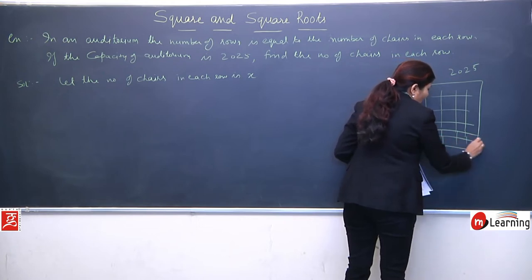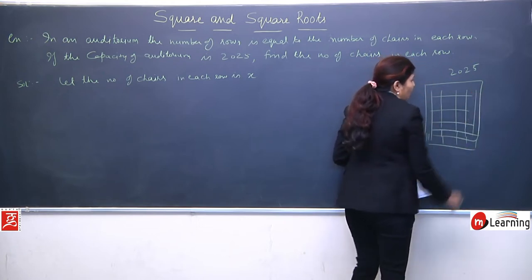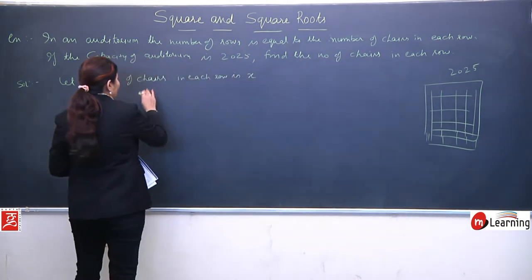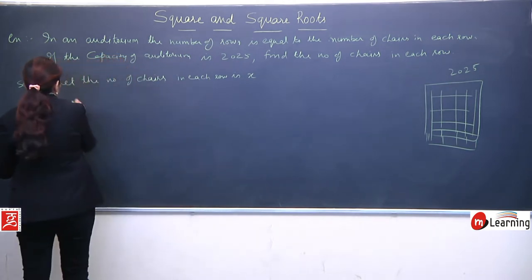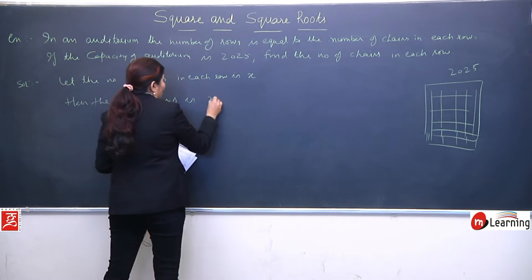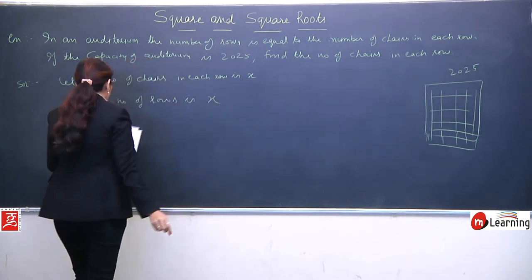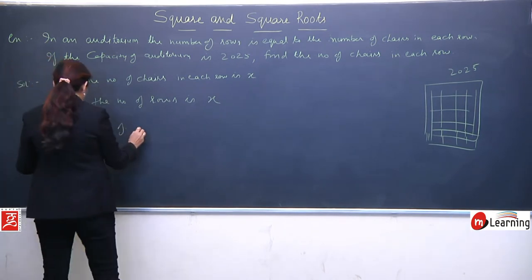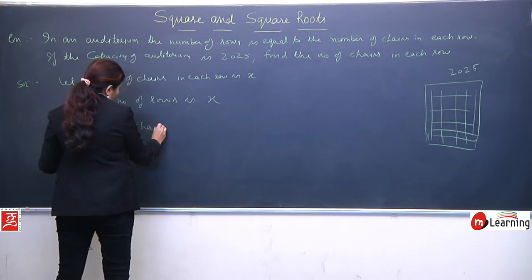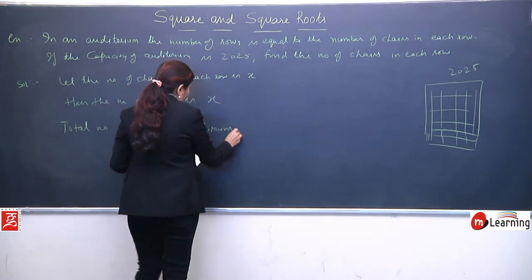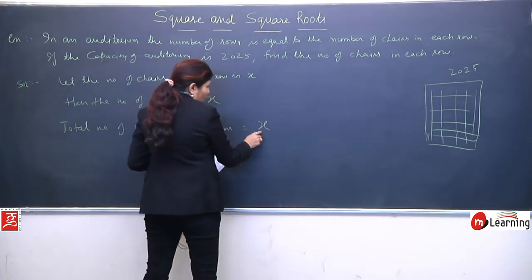If 5 rows, then 5 chairs. We don't know what the case is. As many rows there are, your square becomes that large. So we assume: let the number of chairs in each row be x. Then the number of rows is also x.